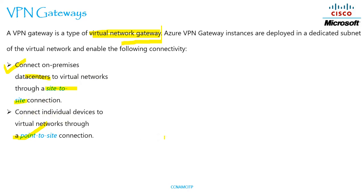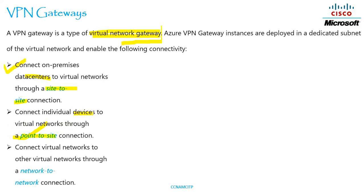So about the three connectivity types: the first one is on-premises to virtual network, the next one is devices to virtual network, and the third one is connecting virtual network to another virtual network through a network-to-network connection. So we have three connectivity types here.